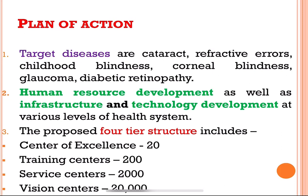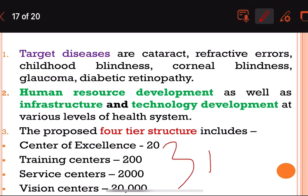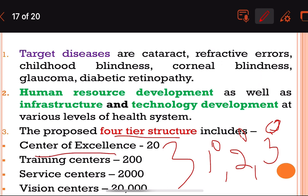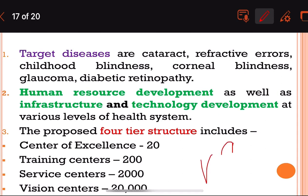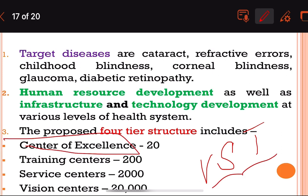Under Vision 2020 — the Right to Sight — there is a proposed four-tier structure for primary, secondary, and tertiary eye care. This includes vision centers at the base, then service centers, training centers, and at the top, the center of excellence.